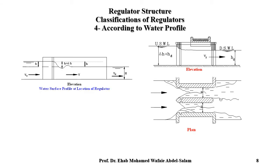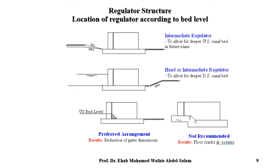According to water profile, different types are possible based on bed level. If the upstream bed level of the regulator is the same but the downstream level differs, different classification types arise. For example, there are intermediate regulator types based on upstream and downstream bed levels, though some configurations are not recommended.